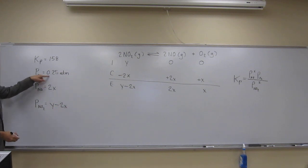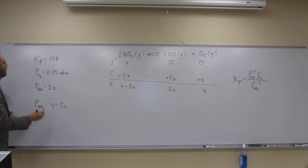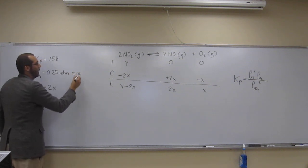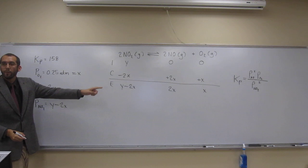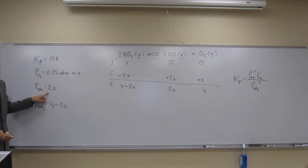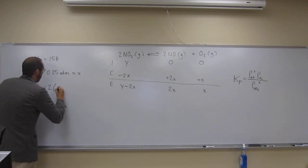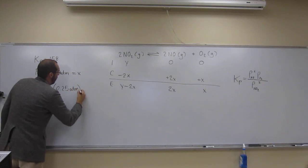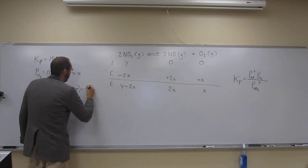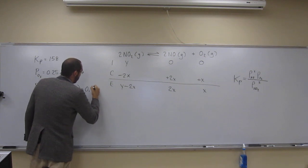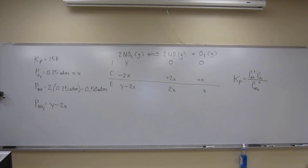But look at this. Partial pressure of oxygen is 0.25 atm, but it's also x, right? So what is going to be the partial pressure of NO? It's going to be 2 times x. So let's just do that. So x equals 0.25 atm. So that equals 0.50 atm. Like that.